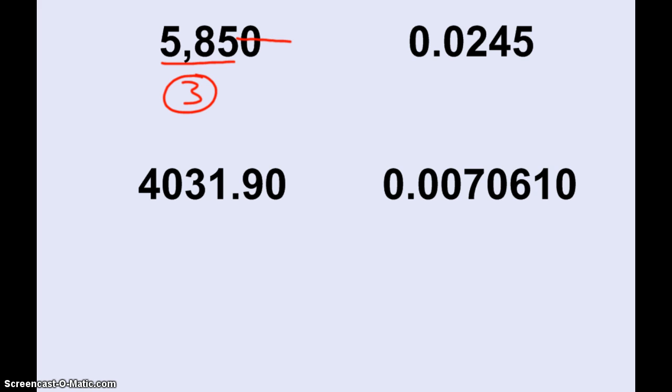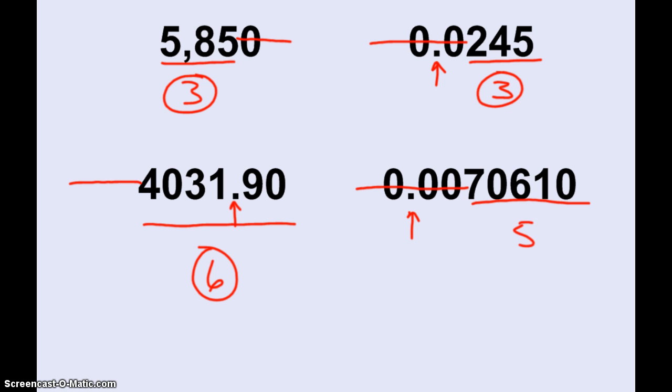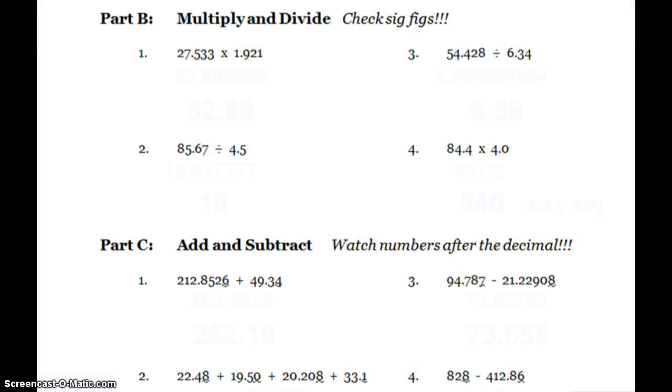So here's a couple different examples. 5,850, there is no decimal point present, so it is absent. So I start on the right, I cross off that zero, and then that means I have 3 sig figs in this measurement. 0.0245, decimal point is present, cross off zeros until I get to a non-zero, 3 sig figs. 4,031.90, decimal point is present, start at the Pacific. I don't have any zeros to cross off, so all 6 of those are sig figs. 0.0070610, zeros all over the place, but there is a decimal point present. Cross off the zeros until I get to a non-zero, that means these five digits are significant. So again, that helps you remember how many sig figs, and we use that when we multiply and divide.